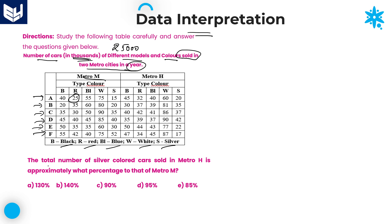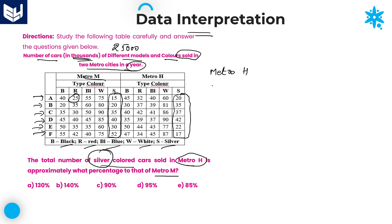First, read the first question. The total number of silver color cars sold in Metro H is approximately what percent of that of Metro M? As we are talking about silver color Metro H, we need to add all these values — the summation of all silver color values in Metro H — and find what percentage that is of Metro M.